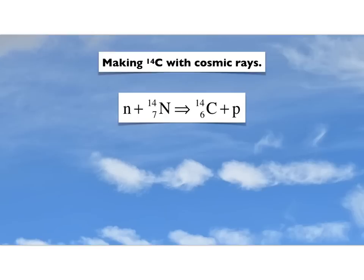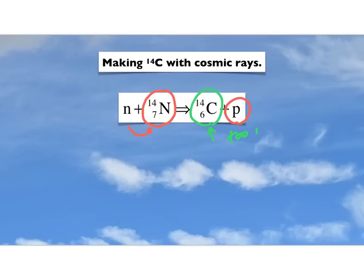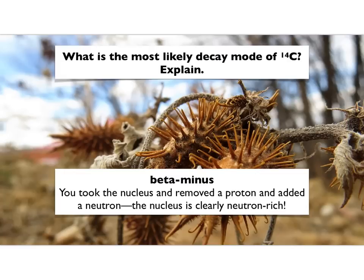Remember how we made the carbon-14. We took a nucleus of nitrogen-14, which is stable, stuck in an extra neutron, and popped out a proton. As a consequence, you end up with a nucleus that is clearly going to be neutron-rich — it has too many neutrons. We know how nuclei with too many neutrons decay: the easiest thing is to take a neutron, turn it into a proton, and emit a high-energy negatively charged particle — a beta minus particle. So this is tailor-made for beta minus decay, and that is in fact how carbon-14 decays.